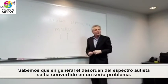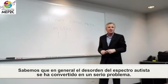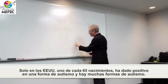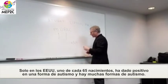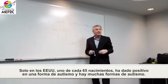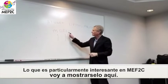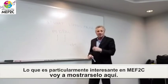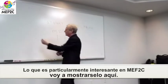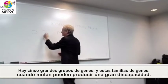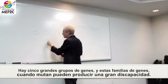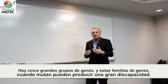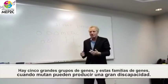Autism Spectrum Disorder has become very prevalent. In the United States alone, one in every 65 live births is thought to result in a form of autism, and there are many forms of autism. A colleague of mine up the coast at UCLA, Dan Geschwind, has shown there are at least five major hubs of genes — families of genes — that when mutated can cause autism or intellectual disability.